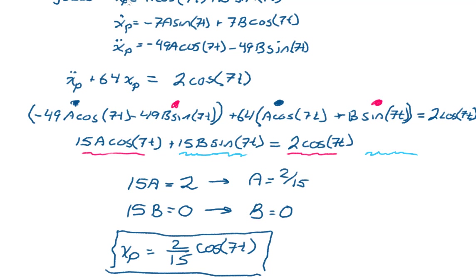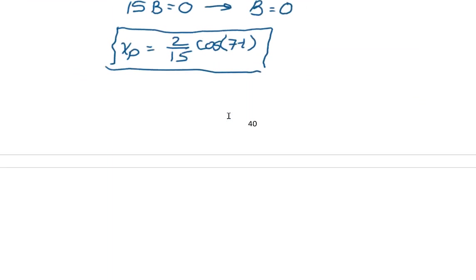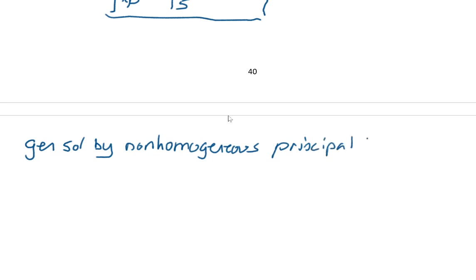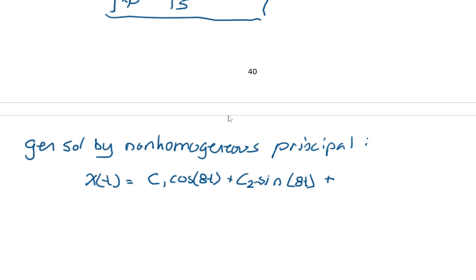Taking our particular solution and adding it to our homogeneous solution gives us the general solution. By the non-homogeneous principle, x(t) = c₁ cos(8t) + c₂ sin(8t) + (2/15)cos(7t).